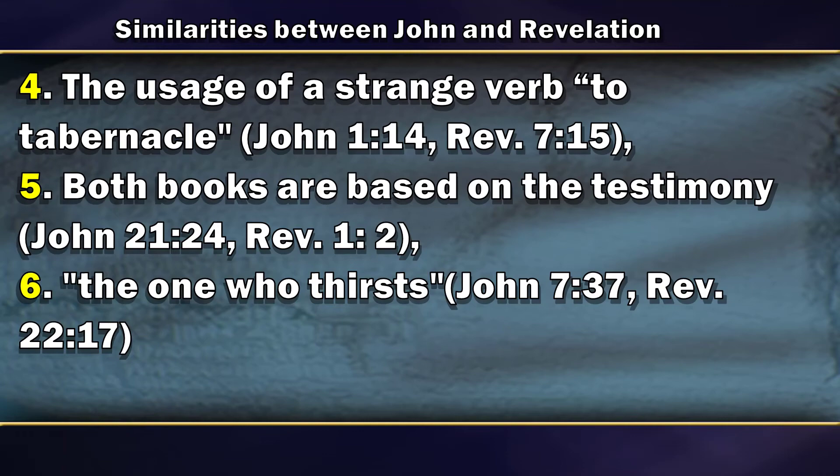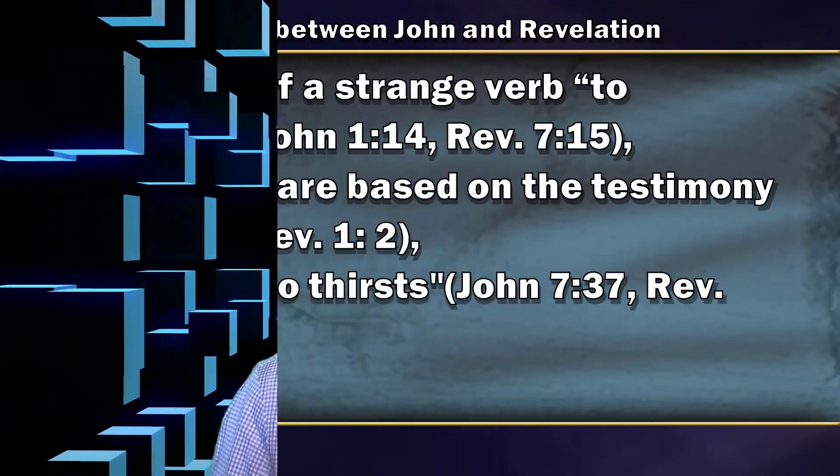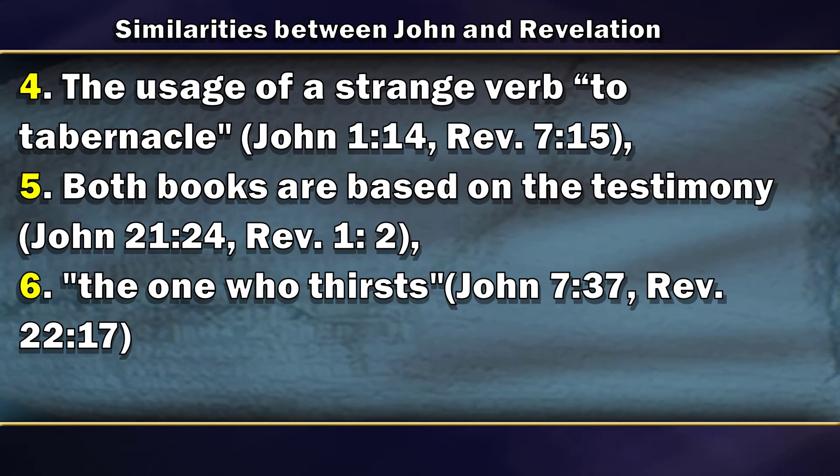Number four: the usage of the strange verb 'to tabernacle,' skineo. This is a very interesting verb because it does not exist in Greek — John makes it into a verb from the noun for tabernacle or tent. He tells us that when Christ comes he will tabernacle within us. It is the same verb used once in the Gospel of John and several times in Revelation. Number five: both books are based on a testimony of Jesus Christ, which is crucial — both describe who Christ is.